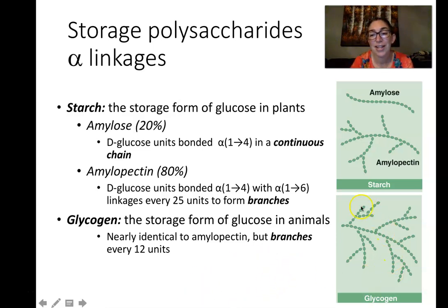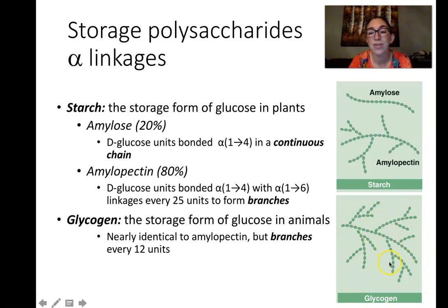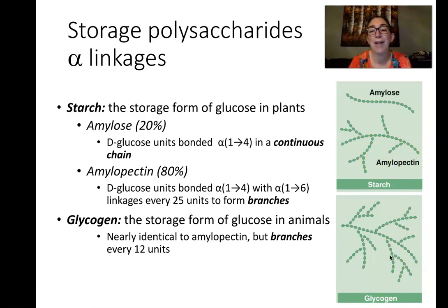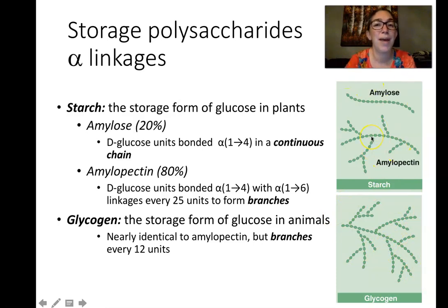Glycogen is the storage polysaccharide in animals, found primarily in muscle tissue and the liver. It looks very similar to amylopectin, but with more branches — the alpha-1,6 linkages occur more frequently in glycogen. So glycogen is the storage form of glucose in animals, while amylose and amylopectin — collectively known as starch — are the storage forms in plants.